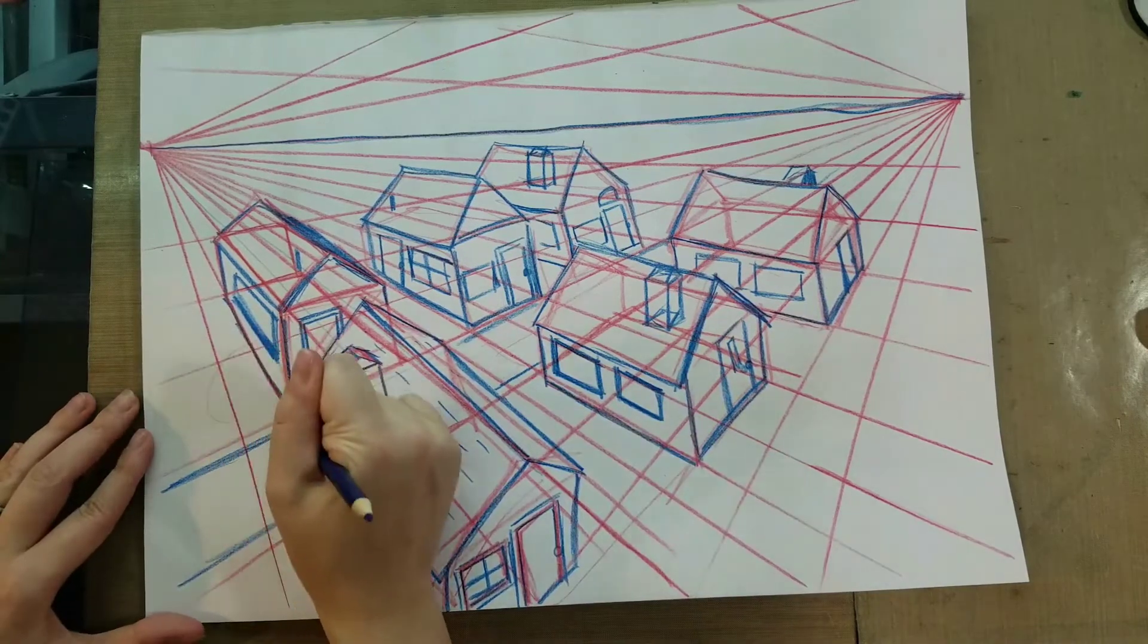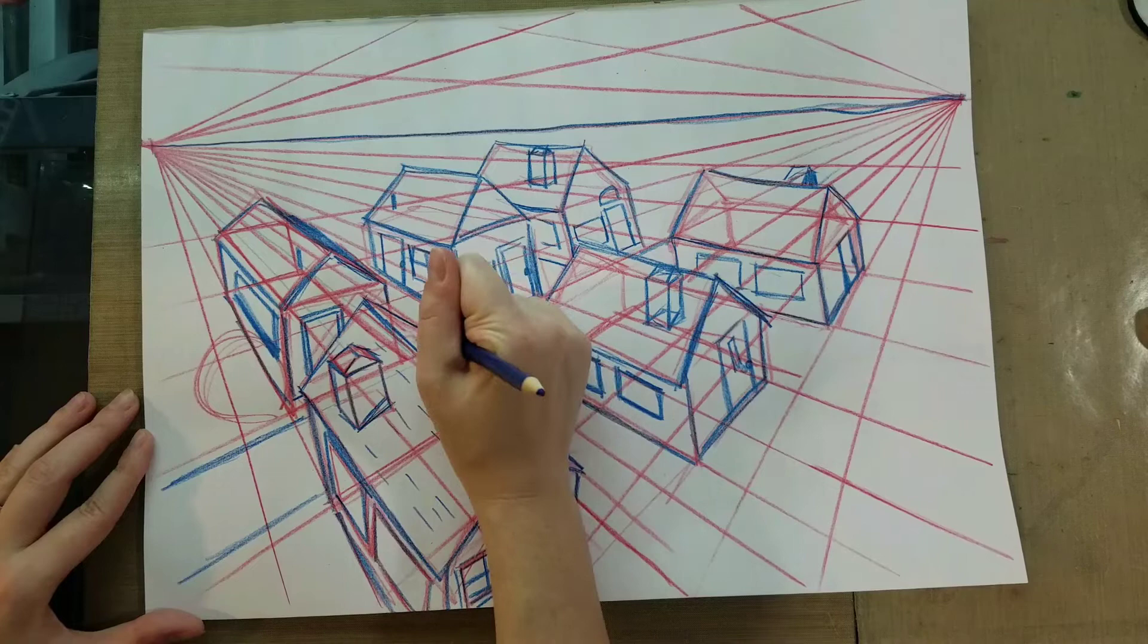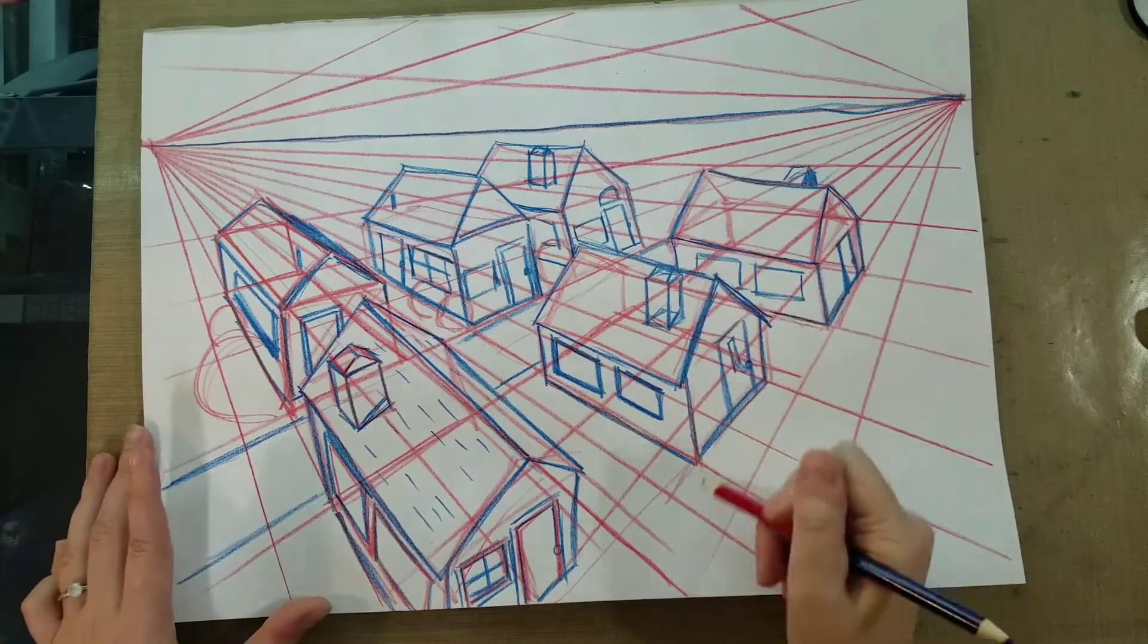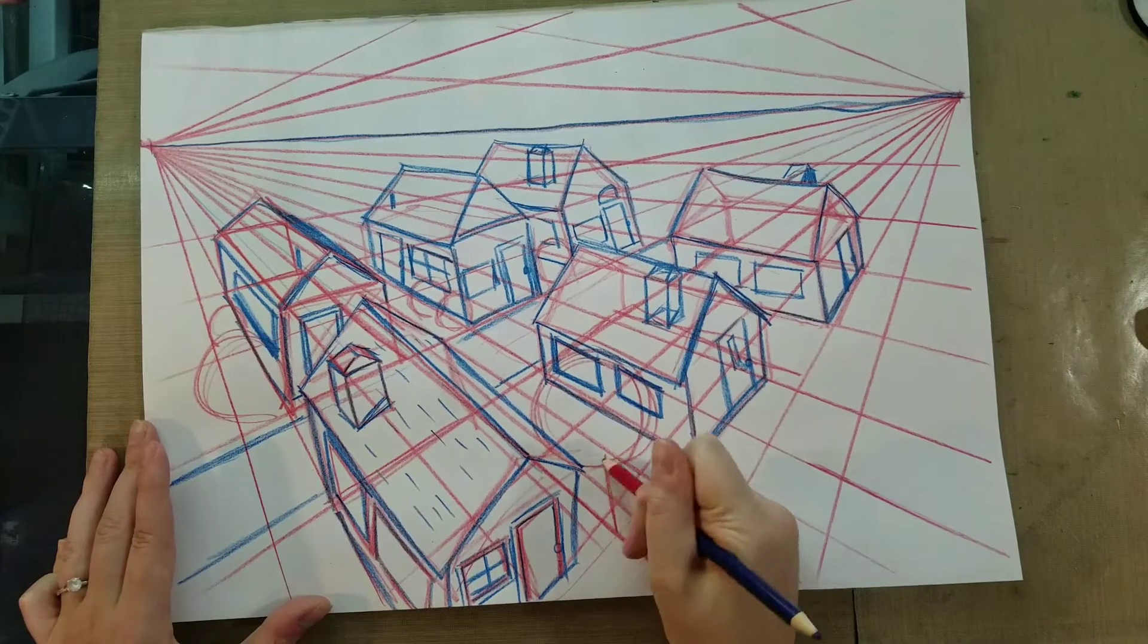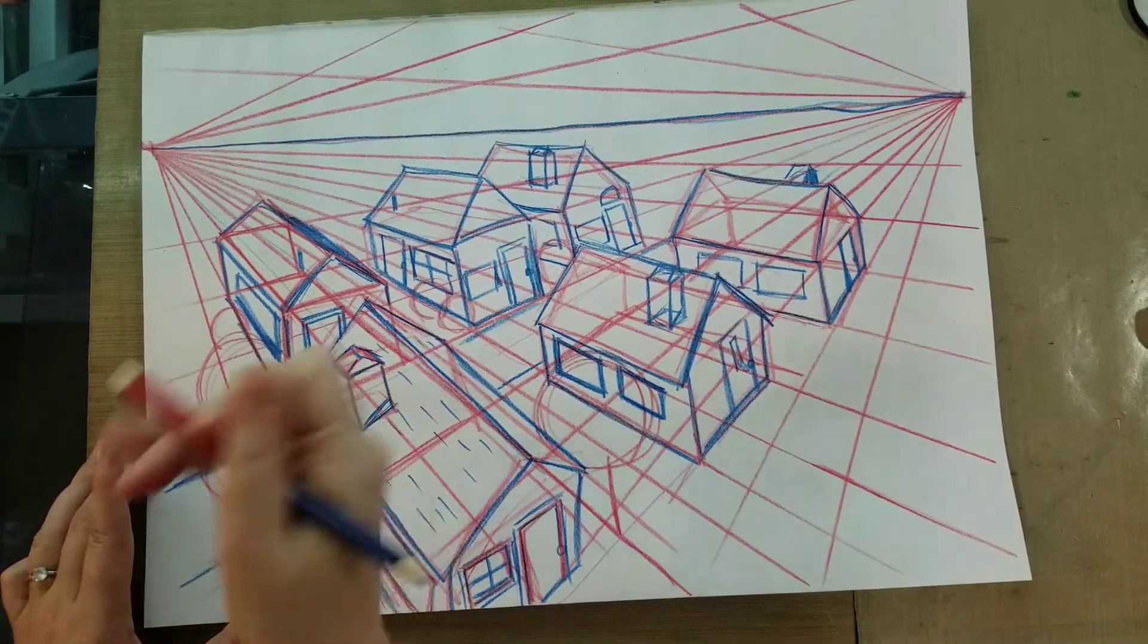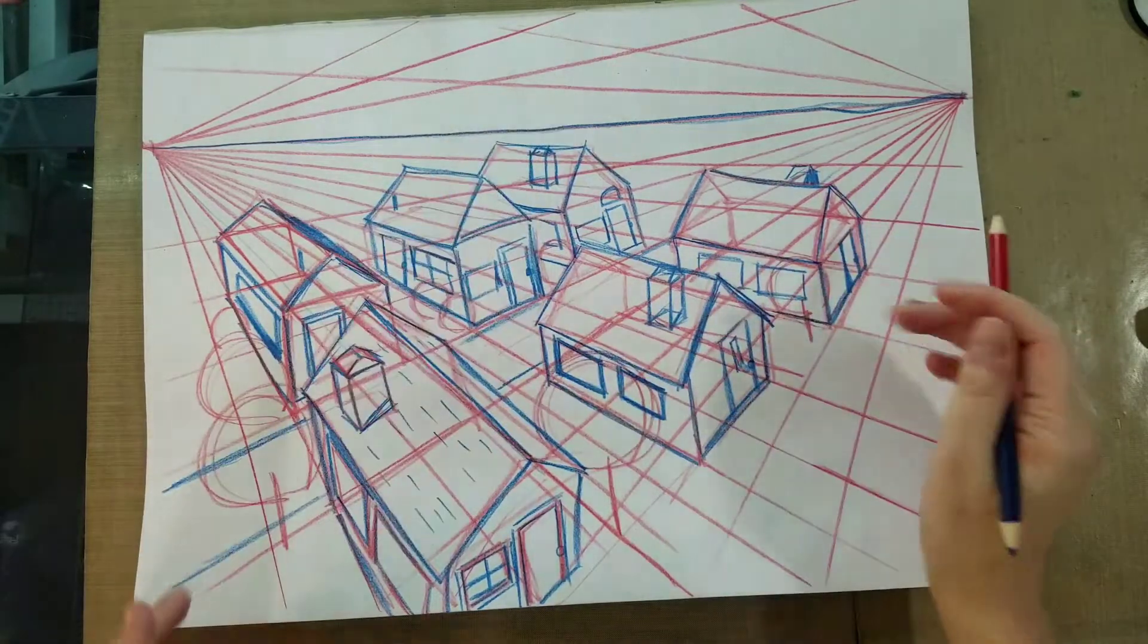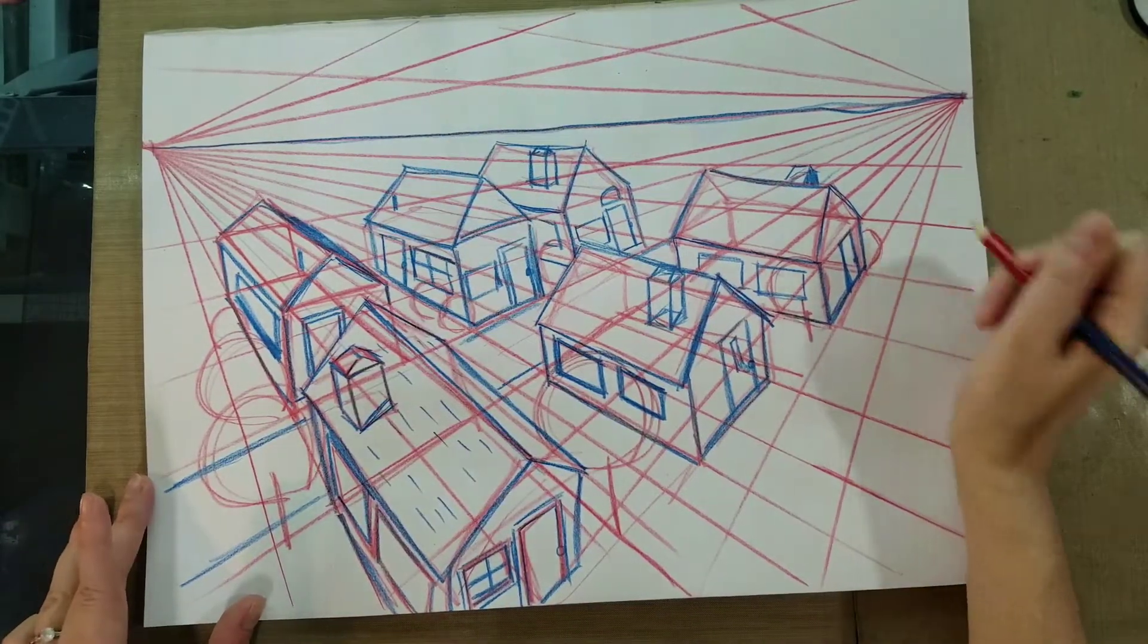And then we can add in some landscaping. So, I'm starting out by just sketching circles, sketching spheres. These are going to be bushes and trees. And remember, overlap is one of the principles of atmospheric perspective as is scale. So, our houses are getting smaller as they go towards our vanishing points and our horizon lines.